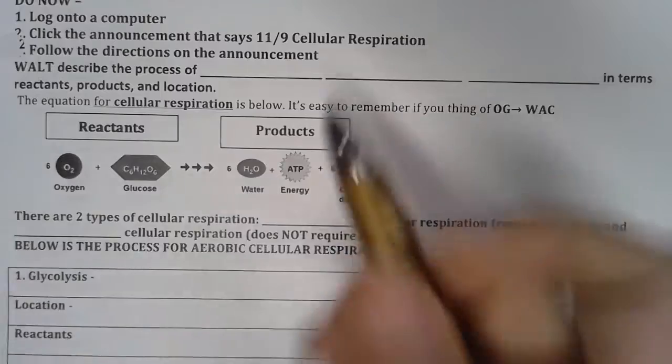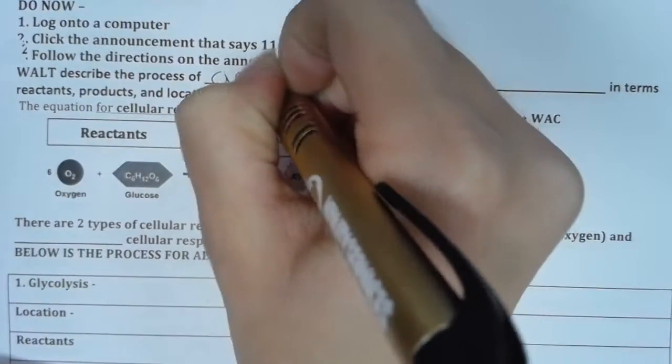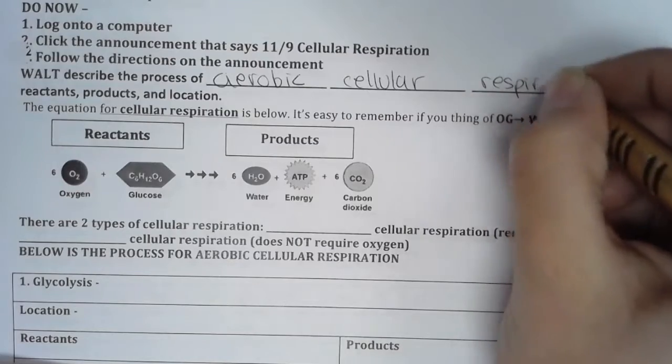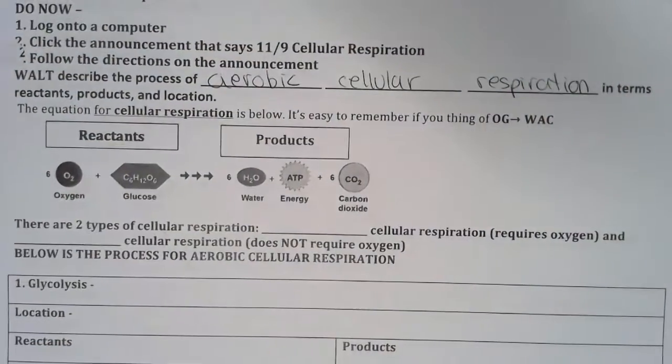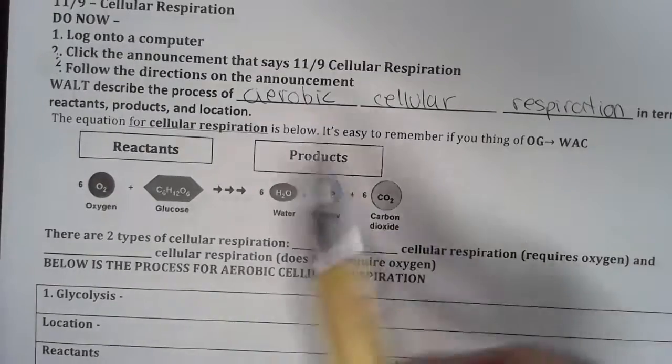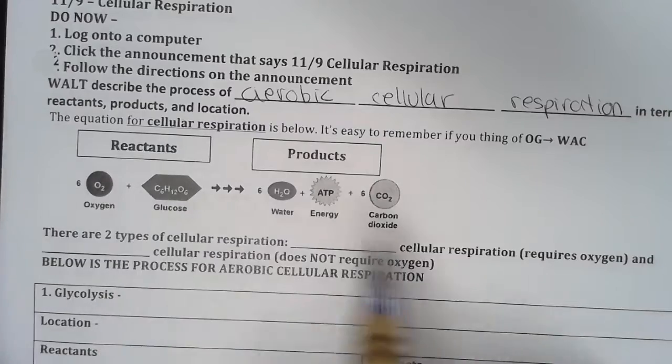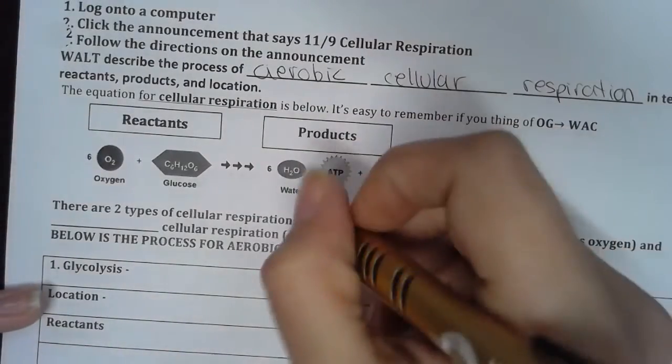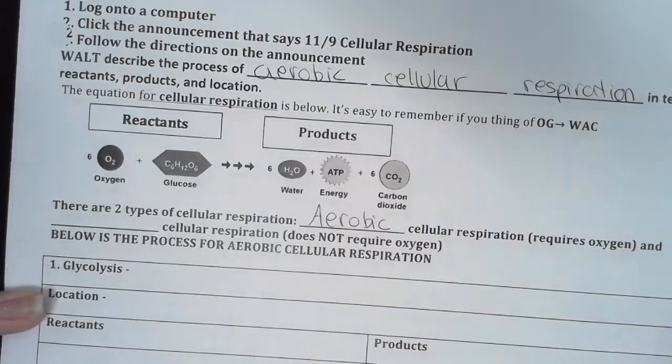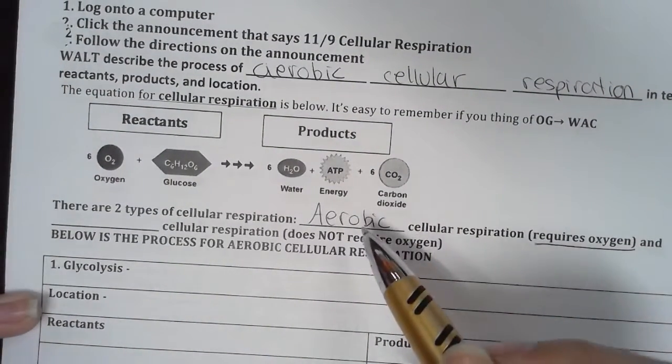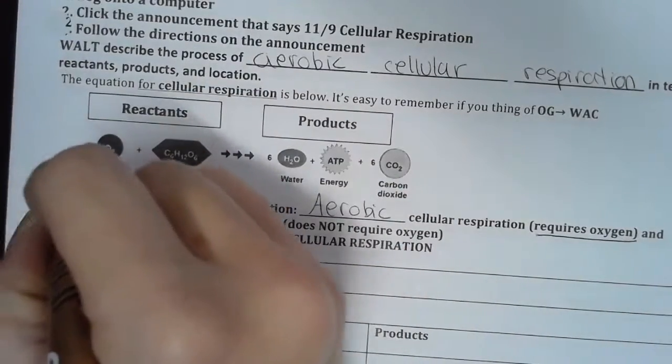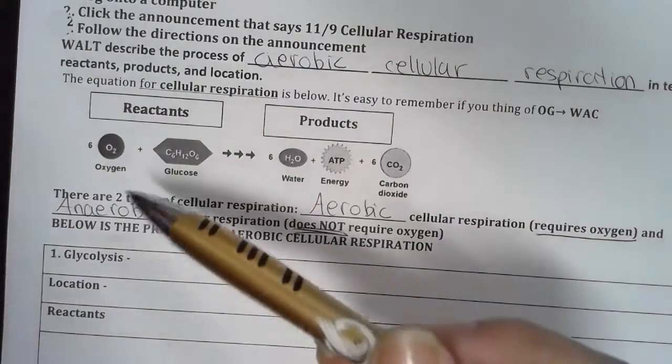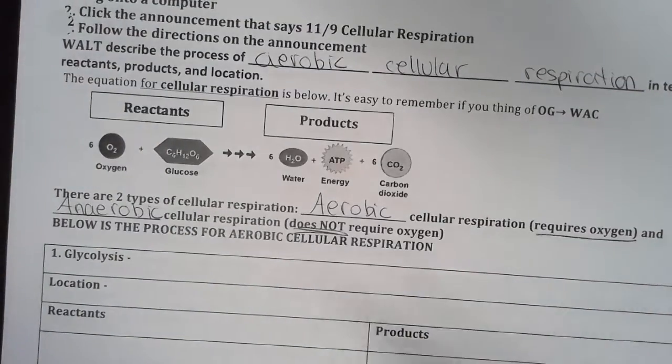All right, we are going to be describing the process of aerobic cellular respiration. We'll go over exactly what aerobic means in a second. So we're going to be describing this process in terms of reactants, products, and locations, the way they're happening in the cell and the organelle. We all know cellular respiration as our famous formula of OG-WAC because this unit is, of course, WAC, but there's actually a little bit more to it. There are two types of cellular respiration. There's aerobic cellular respiration, which requires oxygen aerobic like air. I need oxygen. And anaerobic cellular respiration, which does not require any oxygen. All right, I remember it because it has N-A like nah in it. Like nah, I don't need any of the oxygen. I'm good.